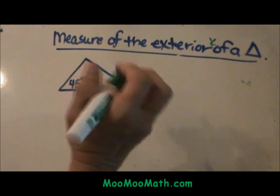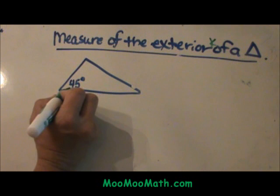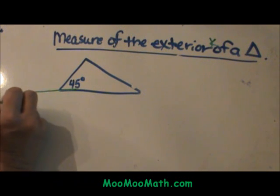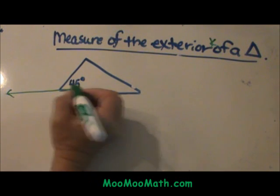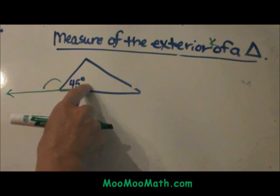To create an exterior I am going to go to the vertex that I know, the 45 degrees, and I am going to extend this side out. Now I have created an exterior angle. So this is now the exterior angle associated with the 45 degree interior angle.